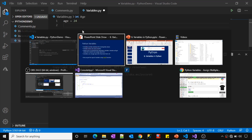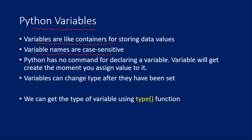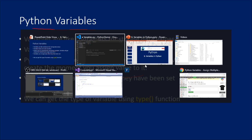In Python, there is no command for declaring a variable. The moment you assign any value into a variable, that's when the variable type is created for you automatically.